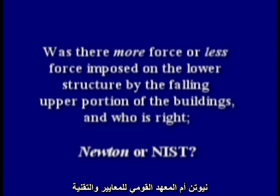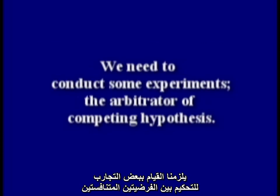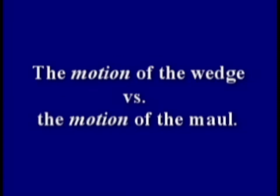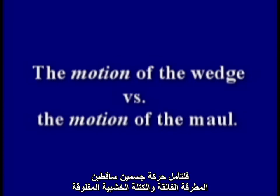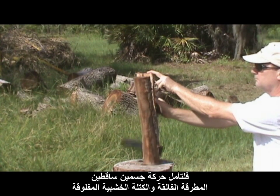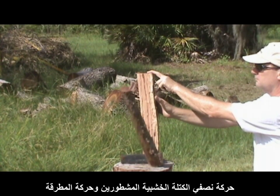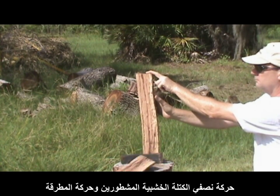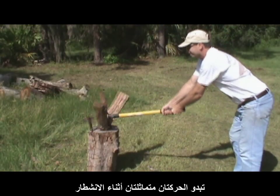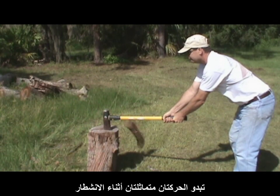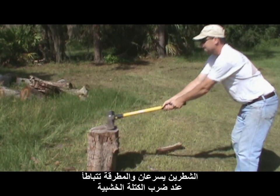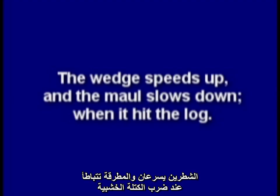We need to conduct some experiments, the arbitrator of competing hypotheses. Let's look at the motion of two falling bodies: a splitting wedge and a splitting maul. The motion of this falling wedge and the motion of this maul look similar as both fall through the log, but the wedge speeds up and the maul slows down when it hits the log.